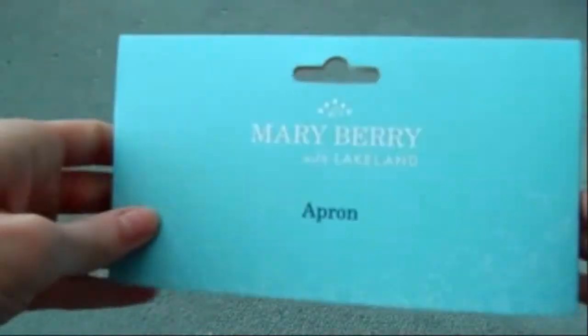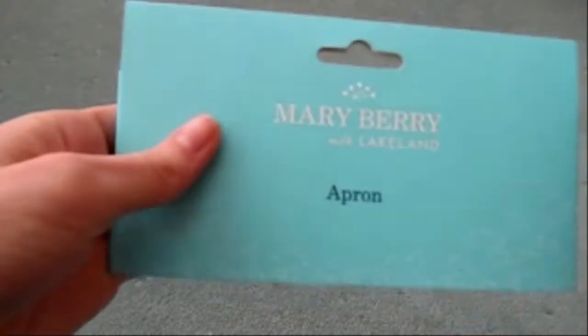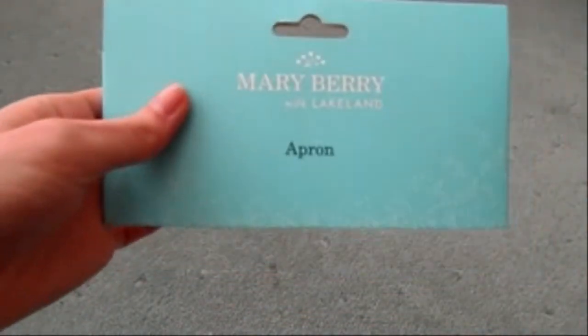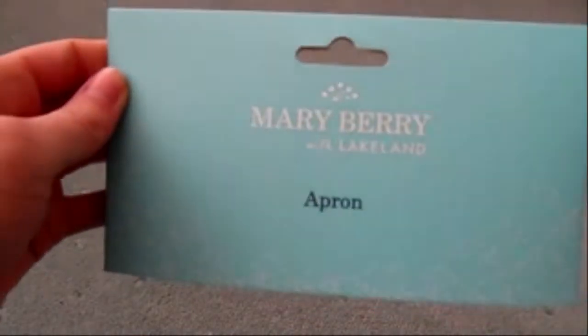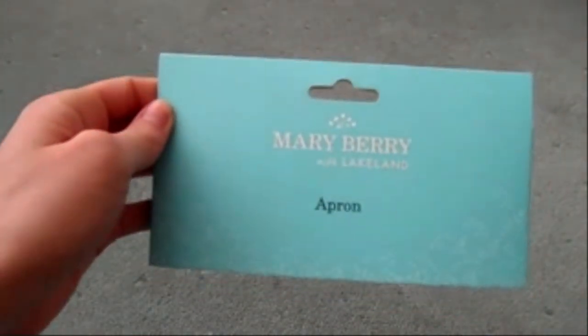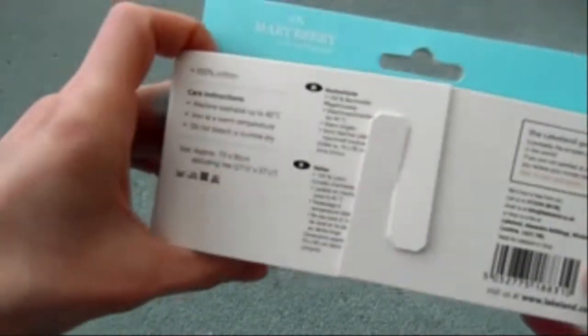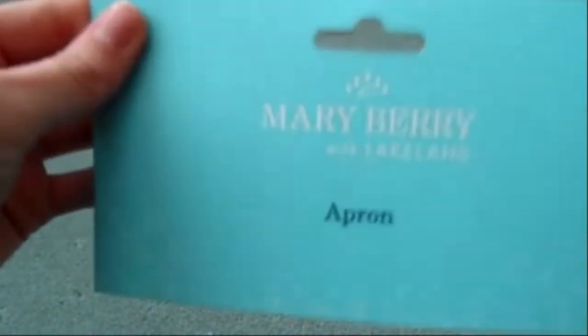Then also from Lakeland, I don't have it on me at the minute, but we needed a new apron in our household and Mary Berry has got a range in Lakeland. So we've got a blue Mary Berry apron which looks so nice. It's so sturdy and thick and it's got a nice big pocket on it. I got a little Mary Berry apron, so that's nice.